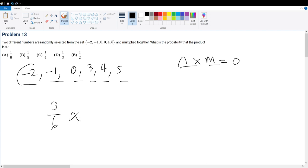Well, let's say I chose negative 2. Then I have 1, 2, 3, 4, 5 remaining. But then I can only choose 4 of them. This will give me the probability that I choose two numbers that are non-zero.